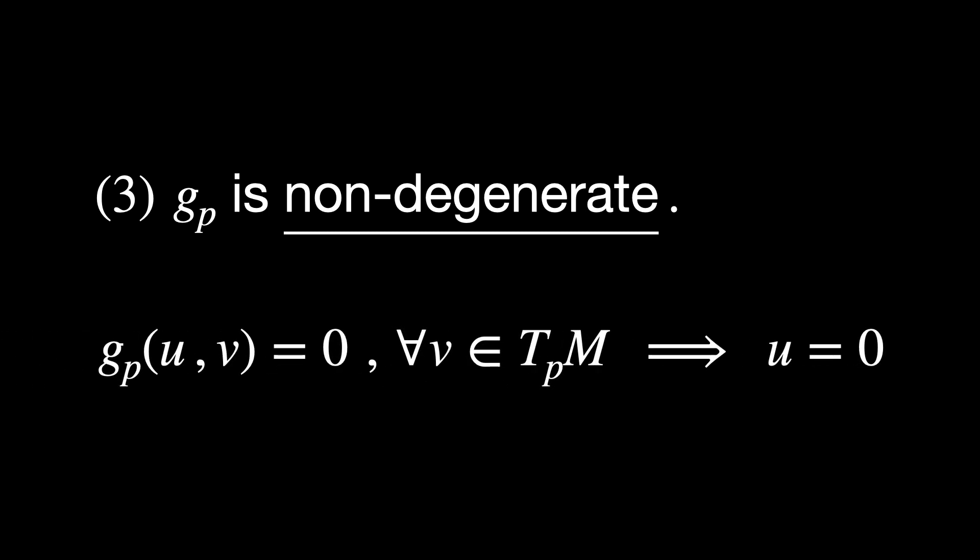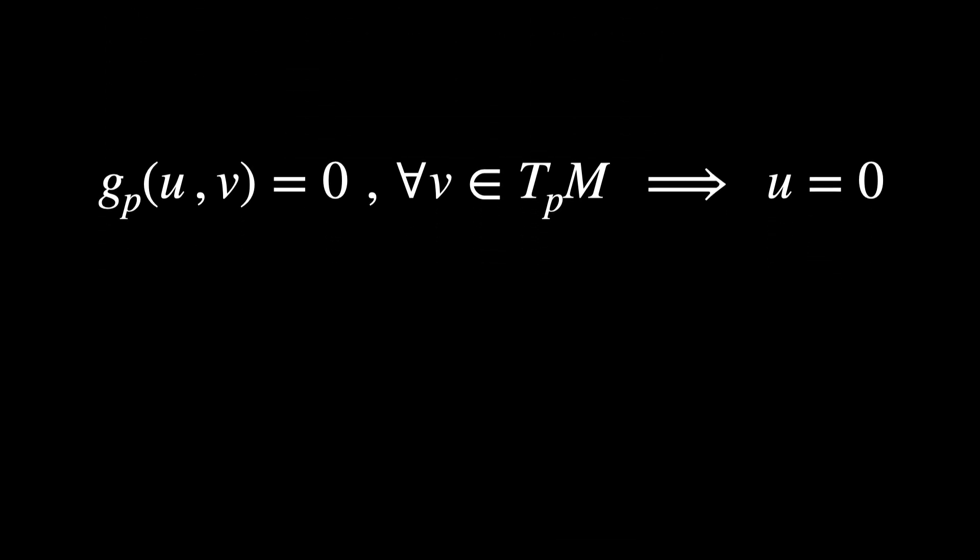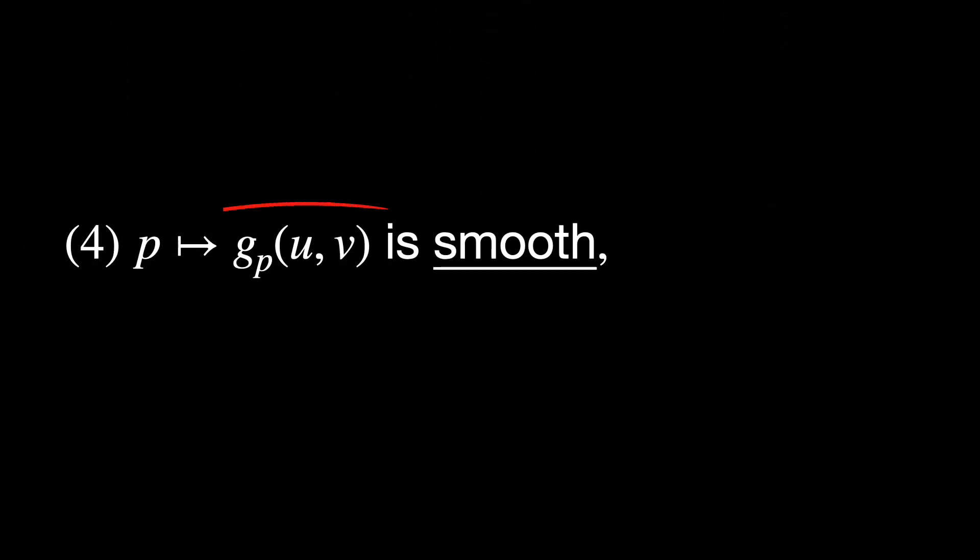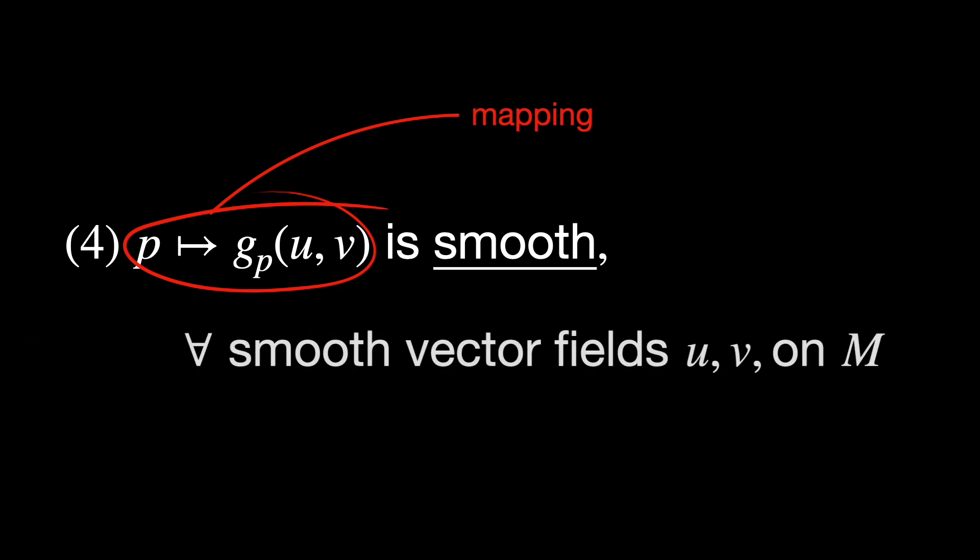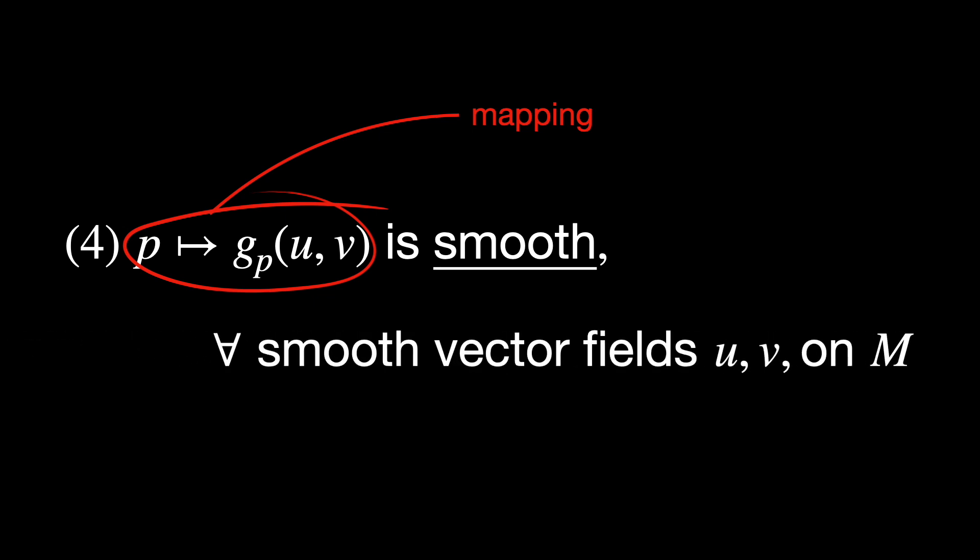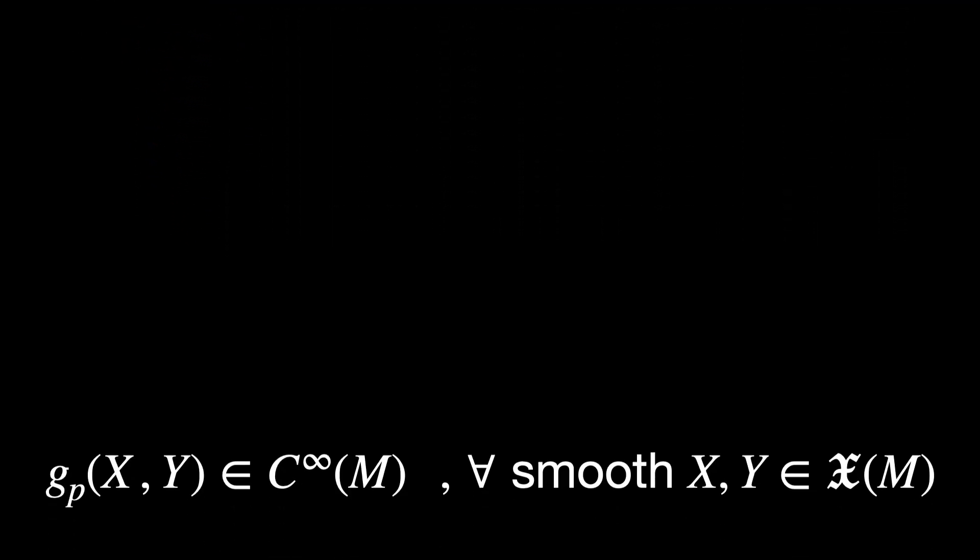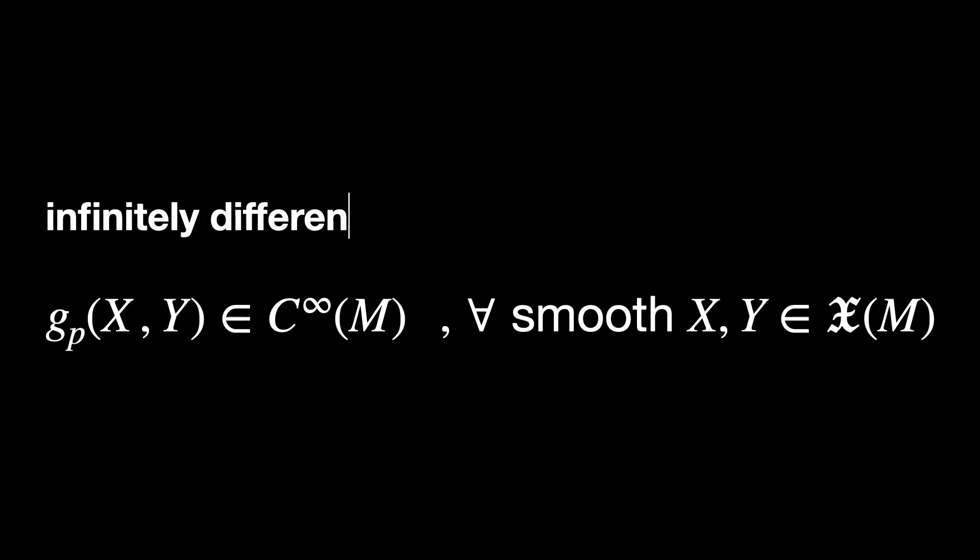Third, g_P is non-degenerate. So if g_P of (U,V) is 0 for all vectors V in the tangent space, then the vector U must be the null vector. And fourth, the mapping from point P to the result of the metric is smooth for all smooth vector fields U and V on M. This means that the mapping G is infinitely differentiable, so it is C infinity.